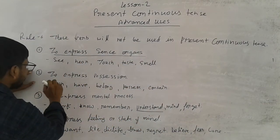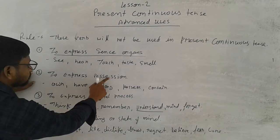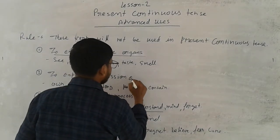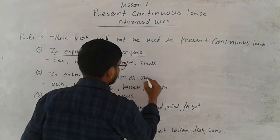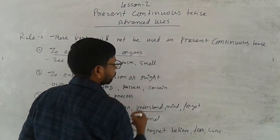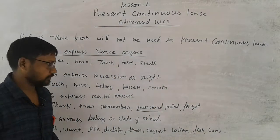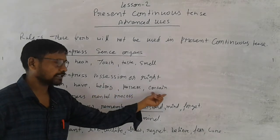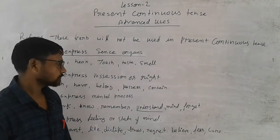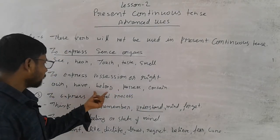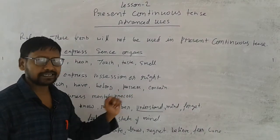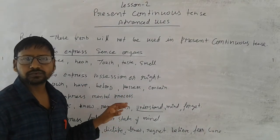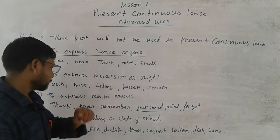Rule number two is to express possession — meaning if you have a right or ownership over something. The verbs are: own, have, belong, possess, contain. These verbs also are not used in the present continuous tense.